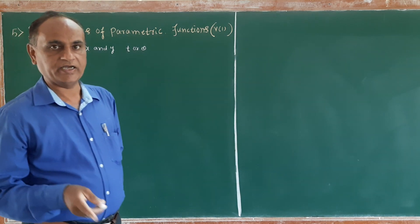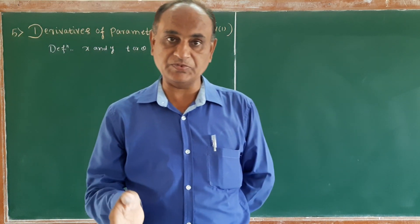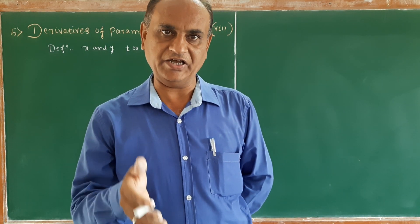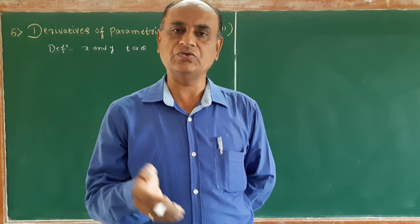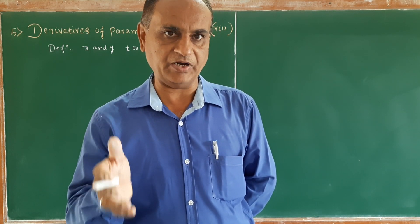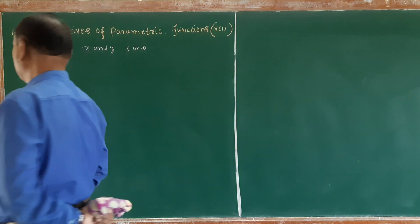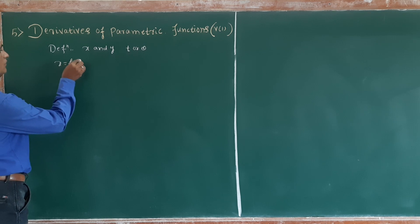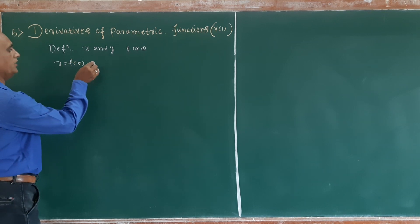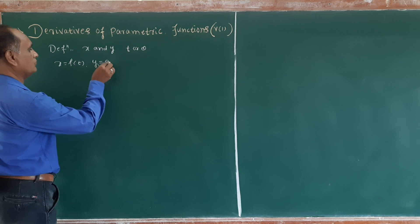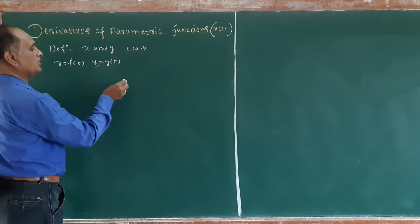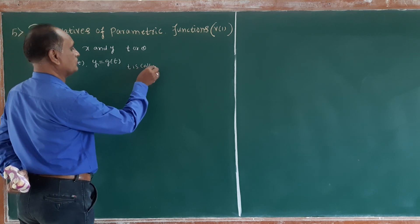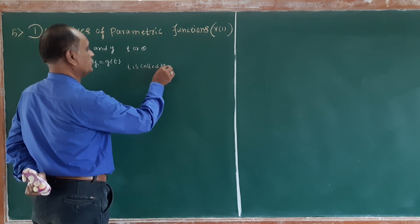So, x and y can be expressed in terms of a third variable. In general, x is equal to f of t, and y is equal to g of t. Here, t is called the parameter.